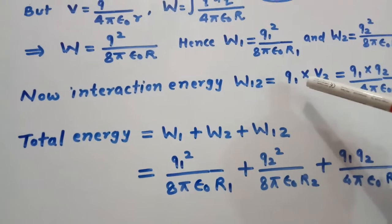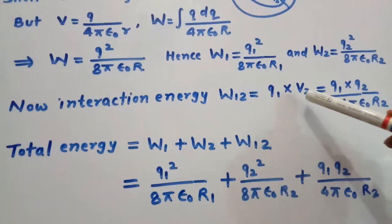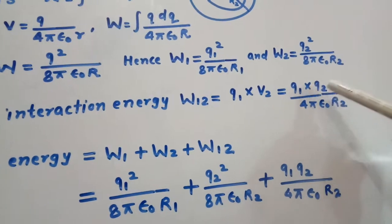Now, interaction energy w12 equals the charge on the first shell multiplied by the potential difference due to the second, so that is equal to q1 times q2 divided by 4π epsilon naught r2.